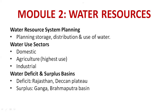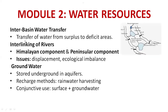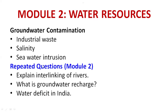Inter-basin water transfer means transferring water from surplus to deficient areas. Interlinking of rivers includes the Himalayan component and Peninsular component as examples. Issues include displacement and ecological imbalance. Groundwater storage involves underground aquifer recharge methods, rainwater harvesting, and conjunctive use (surface plus groundwater). Groundwater contamination is caused by industrial waste, salinity, and sea water intrusion.